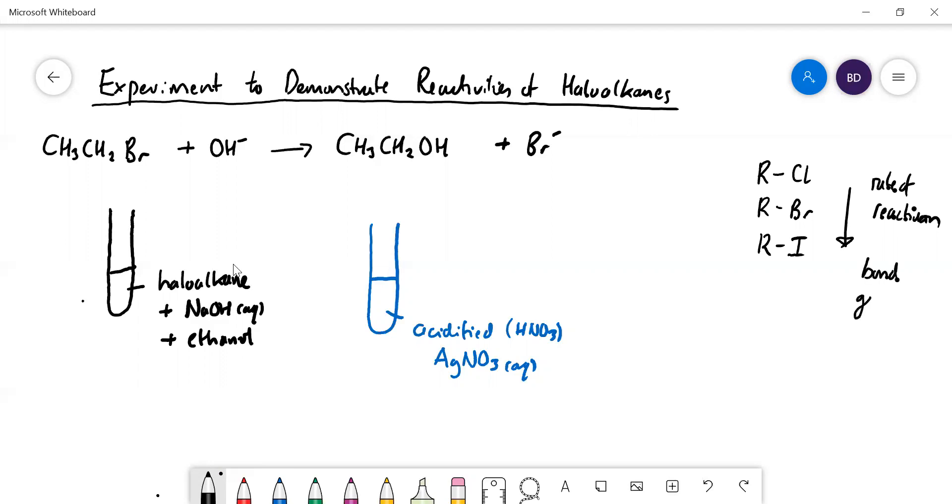Here is a very simple experiment on how we can demonstrate that. Here's our haloalkane - we would use chloroethane, bromoethane, and iodoethane. We're going to react that with aqueous sodium hydroxide.